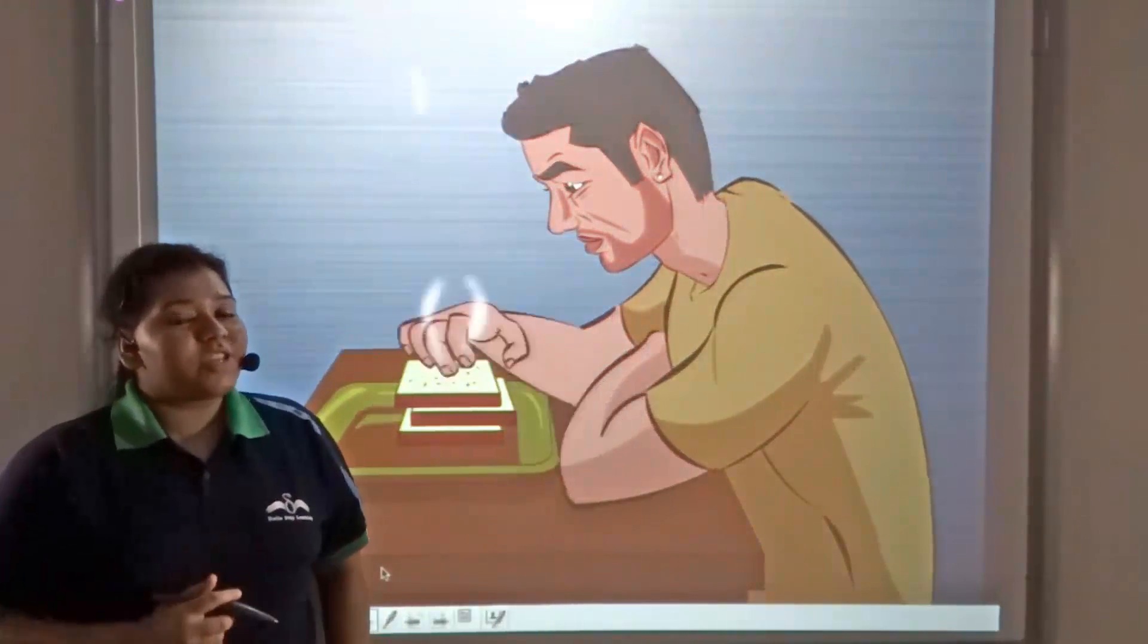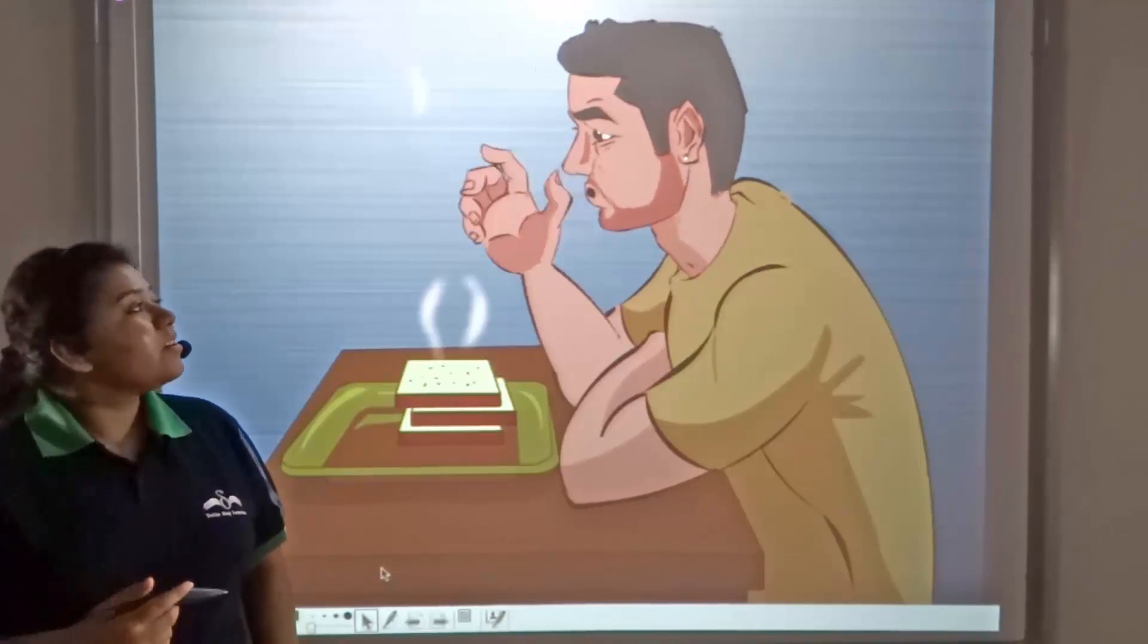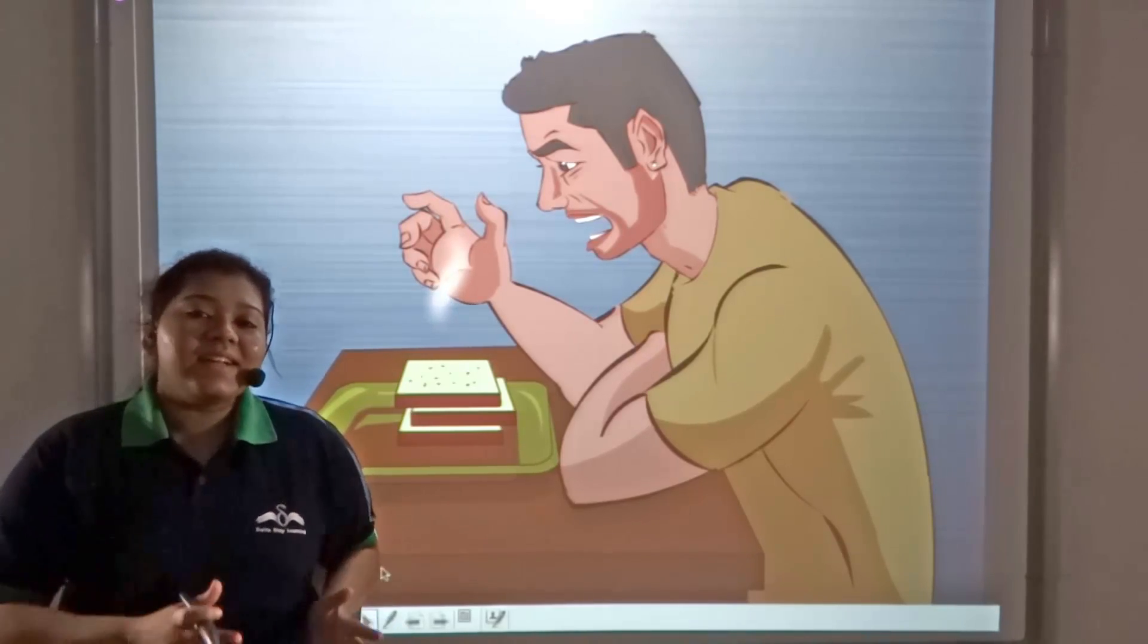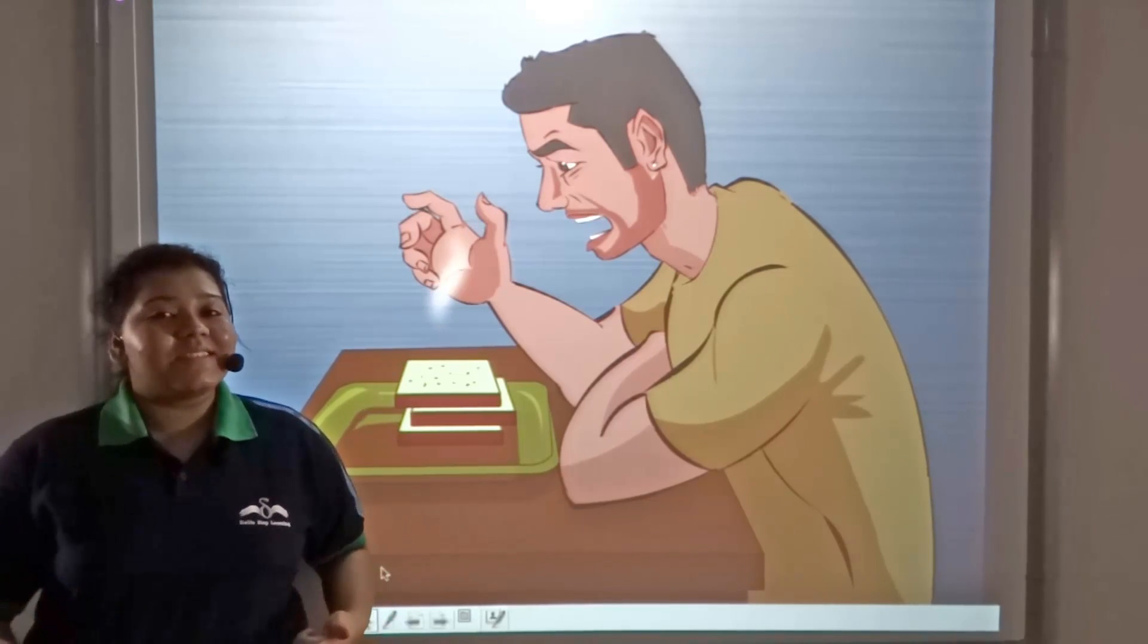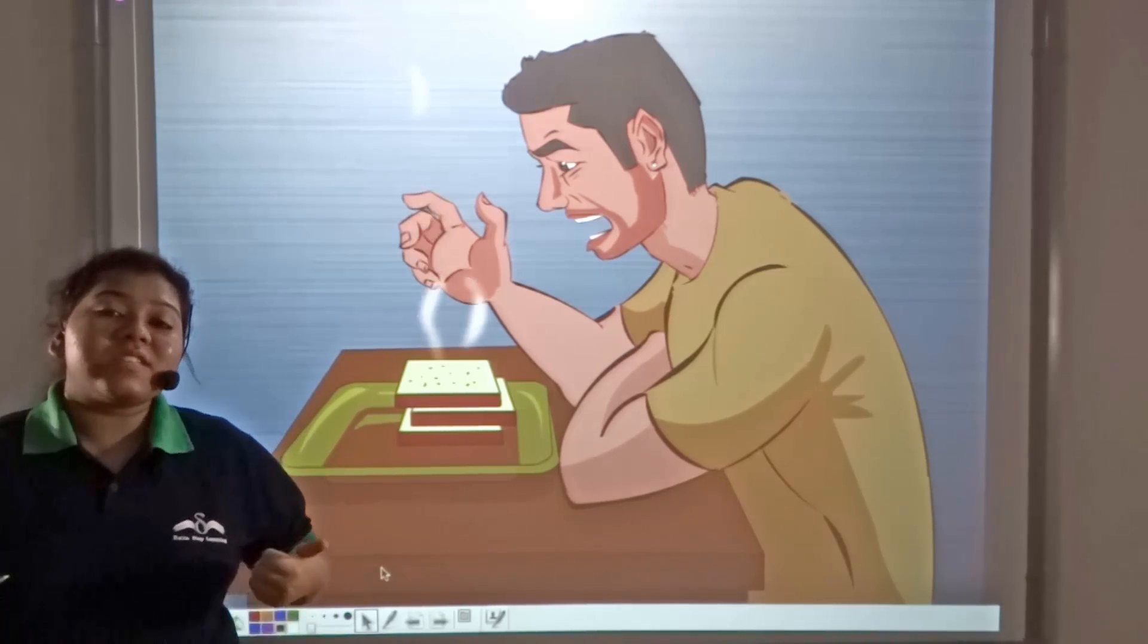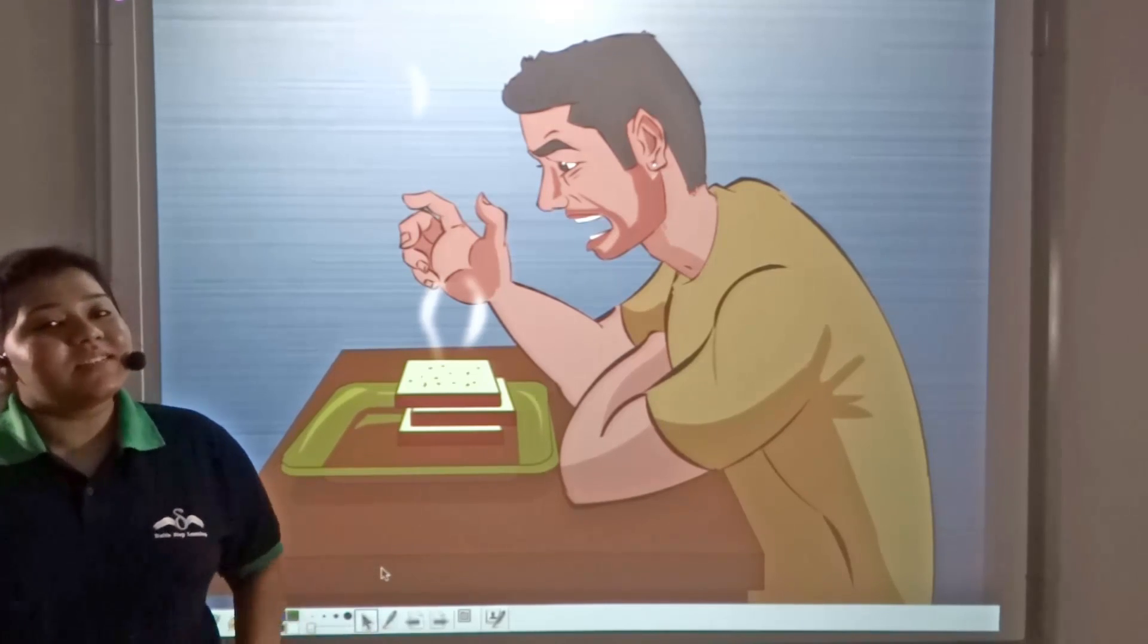When we touch a hot object, we immediately remove our hands because human beings have a well-developed nervous system and muscles which facilitate giving responses to different stimuli.